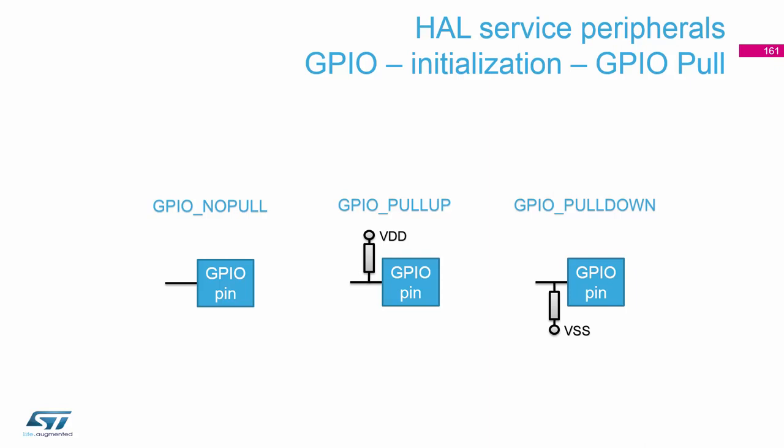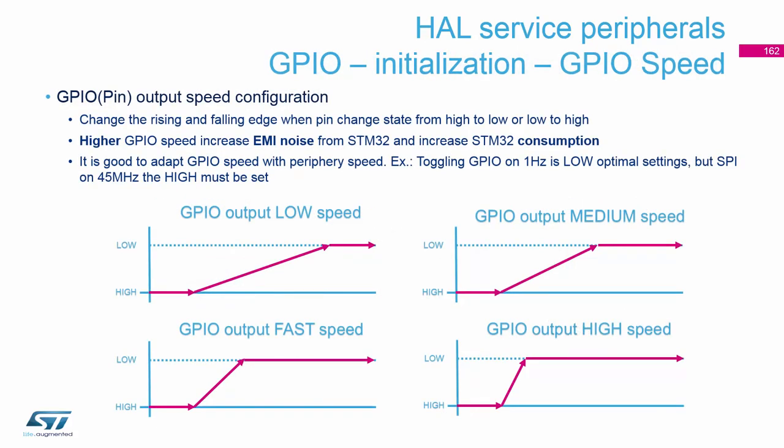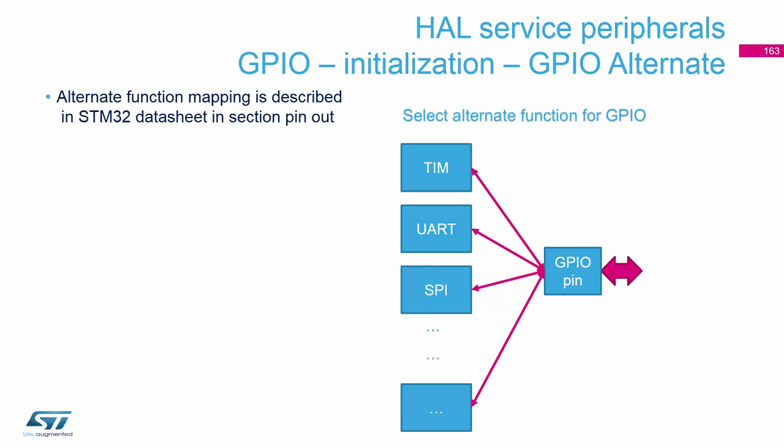For the pull option, you can add a pull-up resistor, pull-down resistor, or no resistor. The speed setting changes the slew rate of the edges — faster edges mean lower slew rate but also increase noise generated by the microcontroller. For toggling an LED, the best option is low speed. However, if you are using SPI at 45 MHz, you must set high speed, otherwise your data may be corrupted on the reception side. For the alternate function parameter, you need to select which alternate function will be used for the pin; if you are not using alternate mode, this option does not matter.